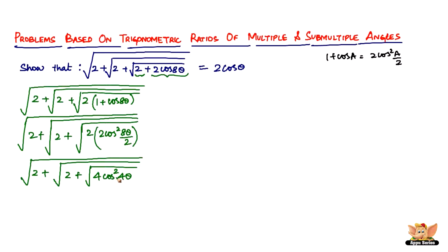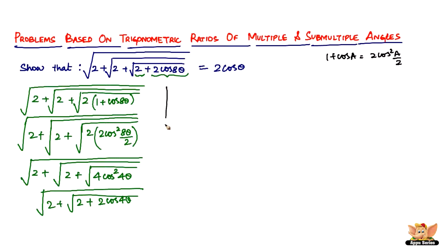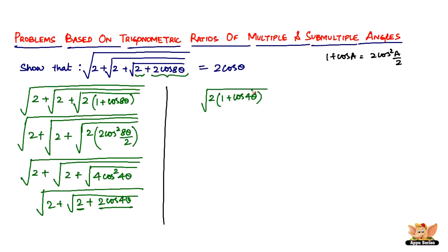The square root of 4cos²4θ: √4 = 2 and √(cos²4θ) = cos4θ, so the square root is removed and we get 2cos4θ. The expression then becomes 2 + 2cos4θ under the next square root. We now apply the same cyclic process — take out 2 from these two terms.